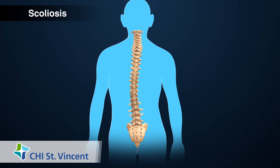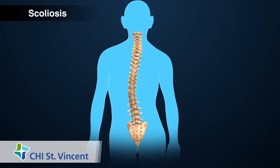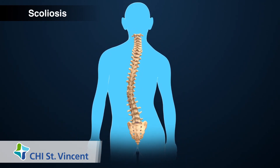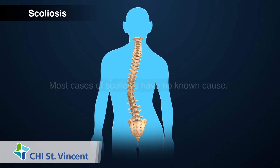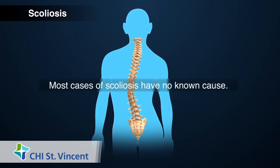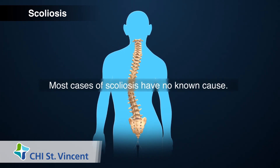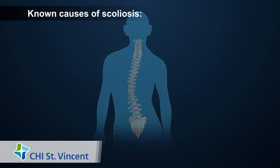Scoliosis is a condition where the spine has an abnormal side-to-side curve. Most cases of scoliosis have no known cause. In some cases, scoliosis may be present at birth; in other cases, it may occur over time.